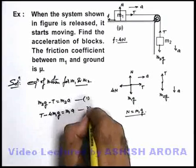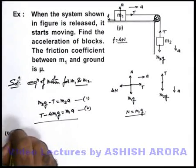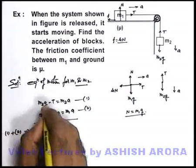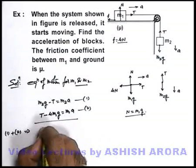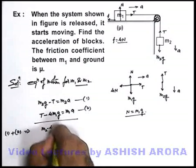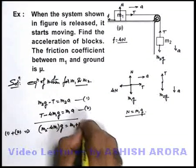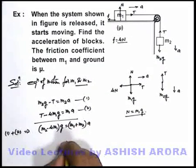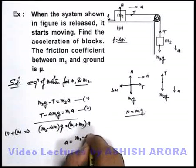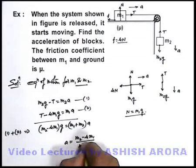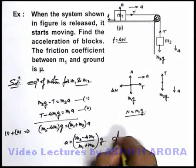So we are having two equations. If we add equation 1 with equation 2, we can see what we are getting here, T gets cancelled out. It will be m2 minus μm1 into g is equal to m1 plus m2 into a. This will get the acceleration of blocks, that is m2 minus μm1 upon m1 plus m2 into g. This is the answer to this problem.